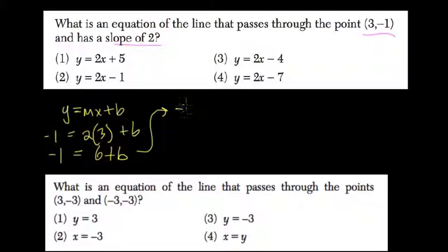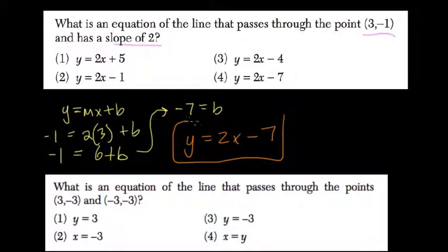Negative 1 minus 6 is negative 7. That equals b. Putting this back together, y equals 2x because the slope is 2, plus negative 7 or minus 7. So we have choice 4.